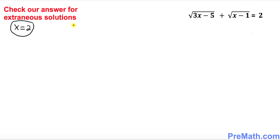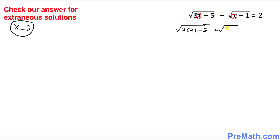Now we need to check our answers for any extraneous solutions. For x equals 2, plug it into the original equation wherever you see x. The equation becomes the square root of 3 times 2 minus 5 plus the square root of 2 minus 1 — is this equal to 2?